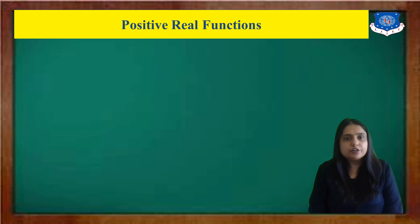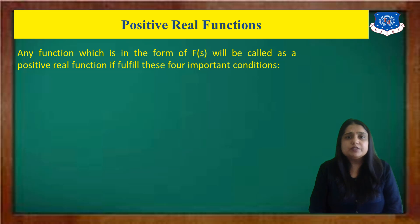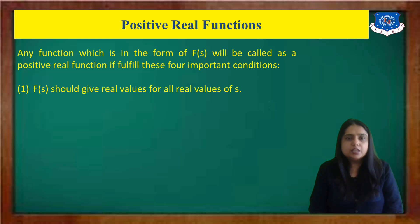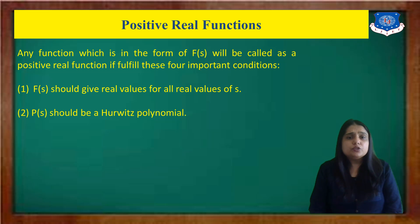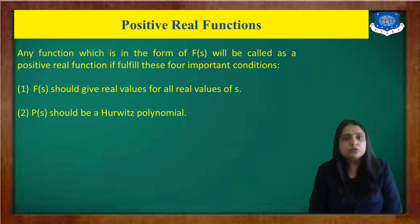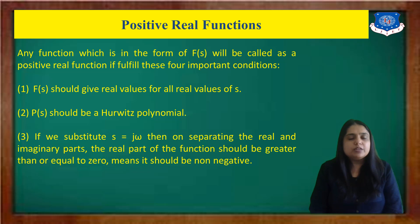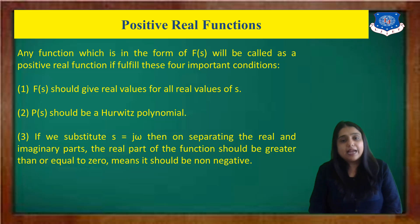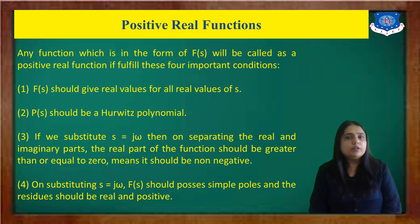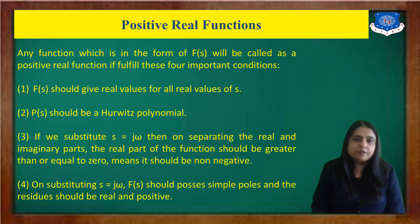Next, we discuss the positive real function. A function F(s) is considered a positive real function if it fulfills the following conditions: F(s) gives real values for all real values of s; the polynomial P(s) should be a Hurwitz polynomial; substituting s=jω and separating real and imaginary parts, the real part of the function should be greater than or equal to zero (non-negative); and substituting s=jω, F(s) should possess only simple poles with real and positive residues.